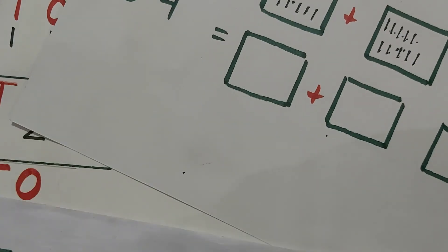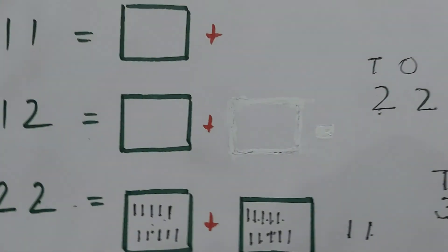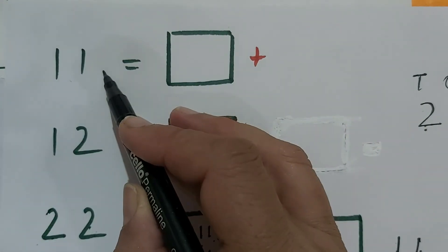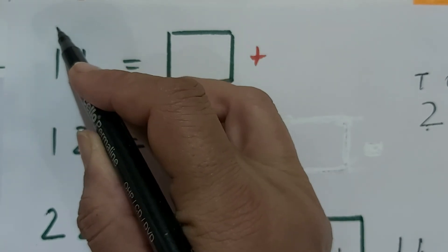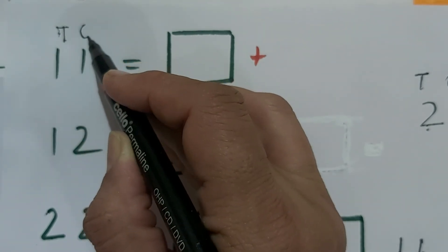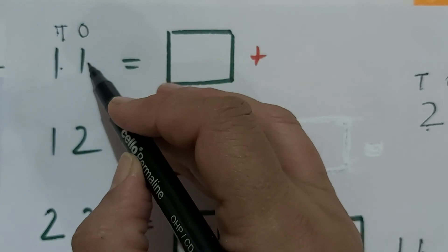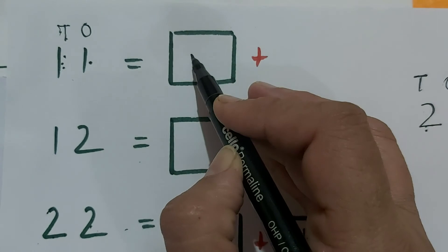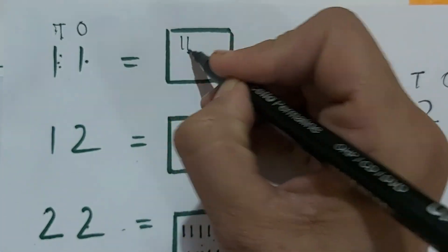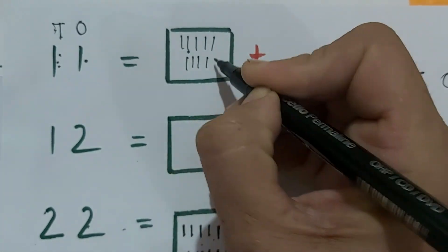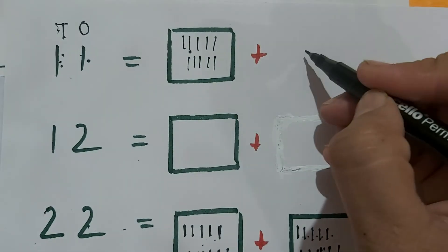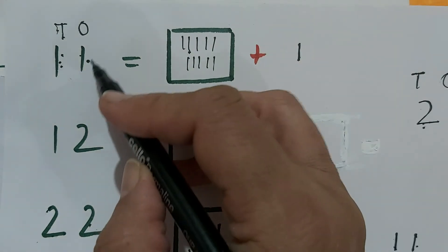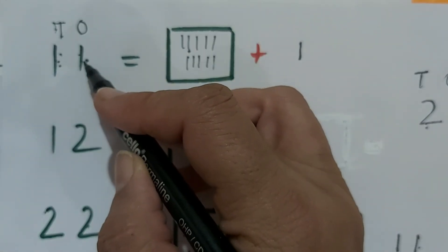I have shown you how to draw bundles. Here is 11. How many tens? This is tens, this is ones. How many tens? 1 ten. How many ones? 1. So for 1 ten, we will draw 1 square. Inside the 1 square, we will draw 10 lines. And for ones, we will draw only 1 line, because at the place of ones it is written 1.